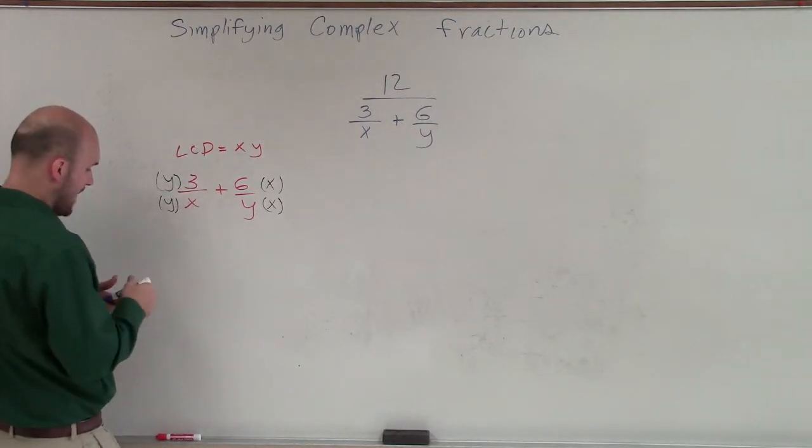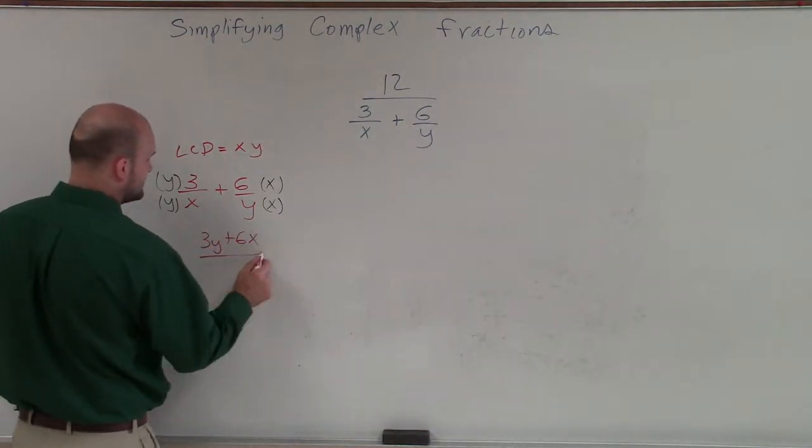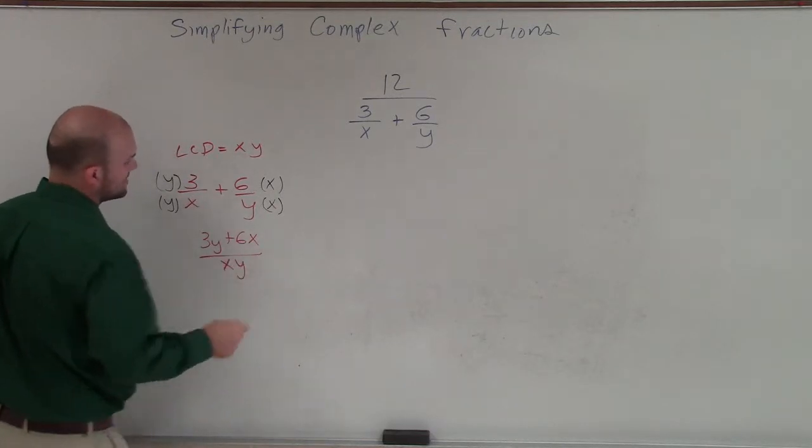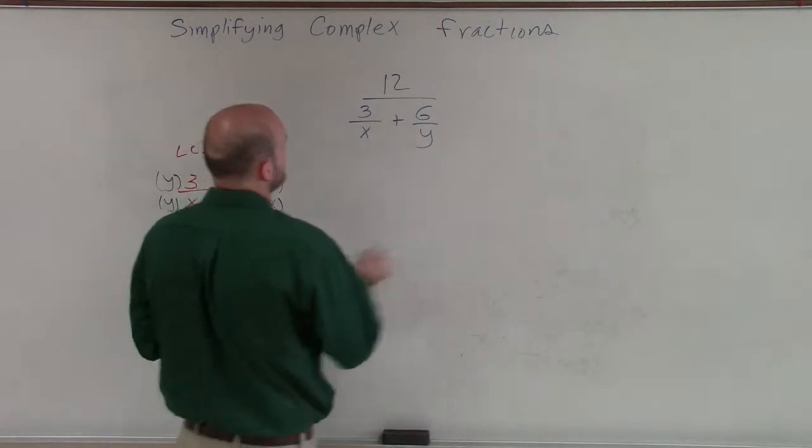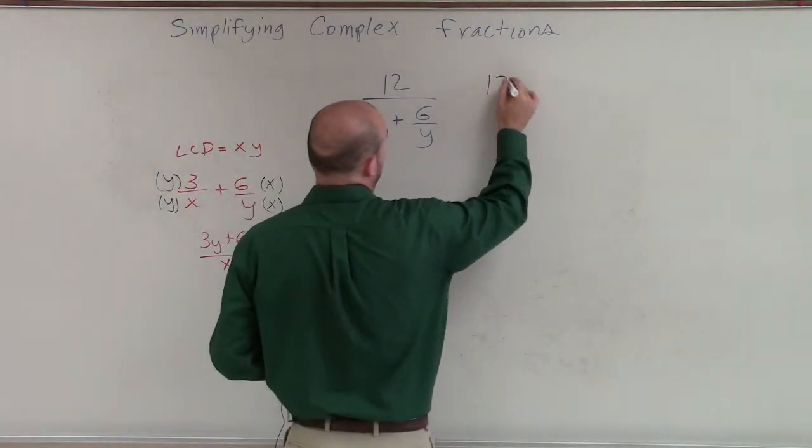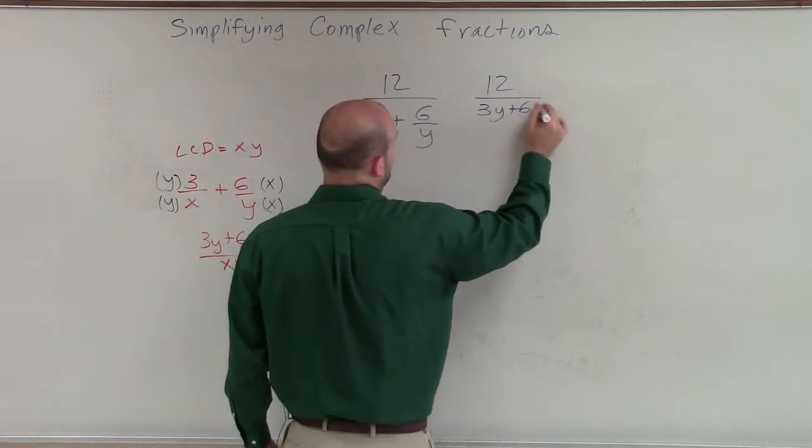Therefore, I now have a simplified denominator of 3y plus 6x divided by xy. So I'm going to rewrite my problem with that. So I'll have 12 over 3y plus 6x.